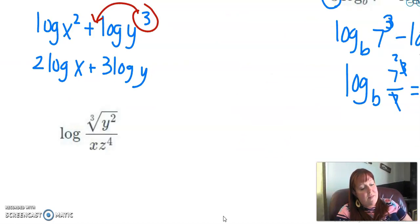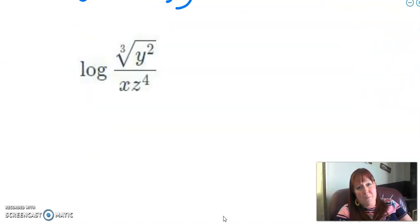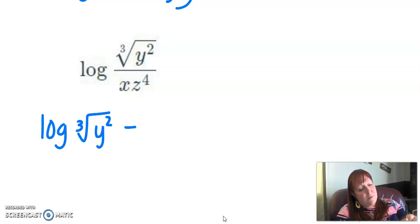Okay, and then this one, it may not be obvious at first, but the first thing I see is it's a quotient. So let's go ahead and get them split apart. So we have log of the cube root of y squared minus log of xz to the fourth. And that fourth is only on the z, not on the x. We have to recognize that.